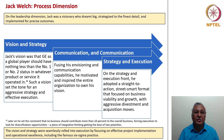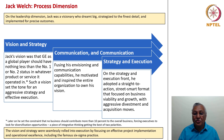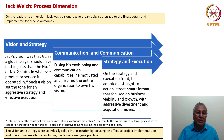He always fused his envisioning with communication capabilities, motivating and inspiring the entire organization to own his vision. In terms of strategy and execution, he adopted a straight-to-action, street-smart format focused on business viability and growth with aggressive divestment and acquisition moves. In later years, he also set another constraint — no business should contribute more than 10% to the overall business — forcing executives to look for diversification opportunities even as they tried to be top-ranking in their businesses. This integrative thinking married two polarities: being number one or two, while not being too dependent on any particular business.